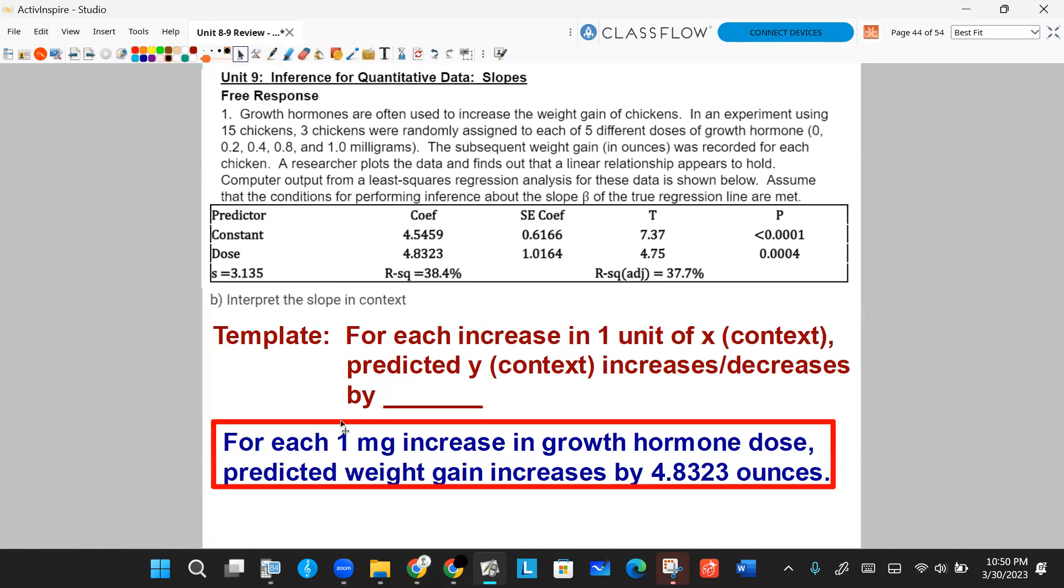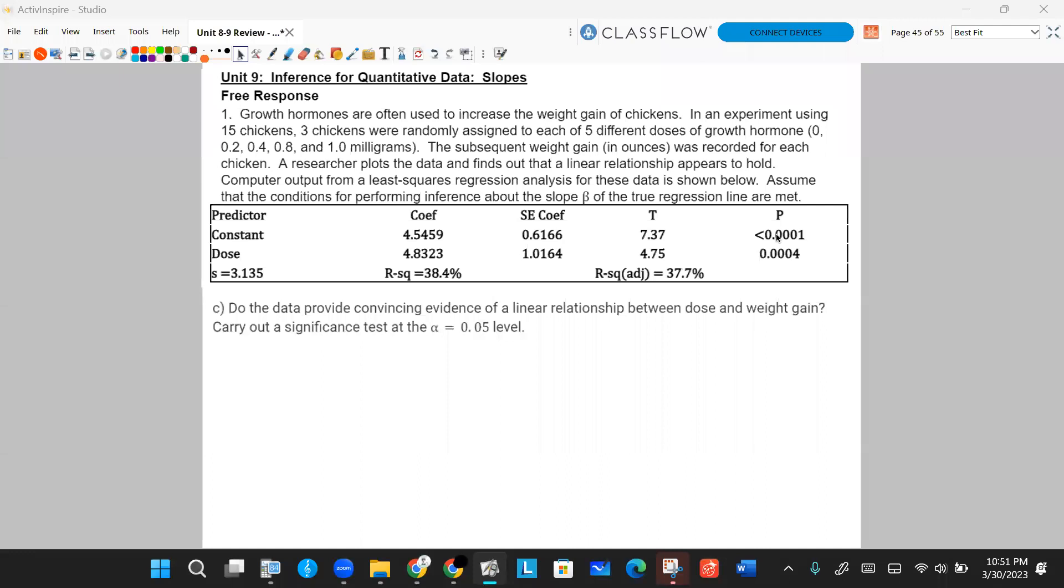Next question, Part C. Part C, did the data provide convincing evidence of a linear relationship between dose and weight gain? Carry out a significance test at the alpha equals 0.05 level. We're going to have a few steps to go through this, we got our state, plan, do, conclude. So let's start with the state thing. If we're going to carry out a significance test, we're going to do a linear regression t-test. So name the test, but then state your hypotheses. It's always going to involve the slope being zero or not equal to zero or greater than or less than depending on the wording of the question. So the question here, very carefully, it says, is there evidence of a linear relationship? It doesn't specify positive or negative, just says linear relationship. So you know that we're looking for a two-sided test.